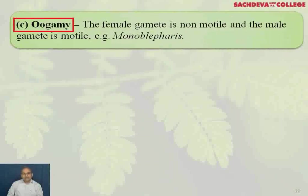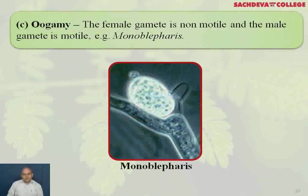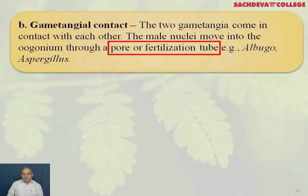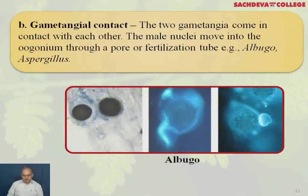Oogamy: the female gamete is non-motile and the male is motile (example: Monoblepharella). Gametangial contact: the two gametangia come in contact with each other; the male nuclei move into the oogonium through a pore or fertilization tube (example: Albugo or Aspergillus). Albugo causes white rust of crucifers.